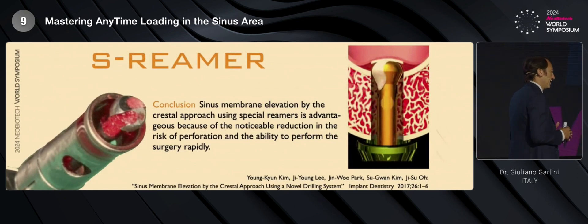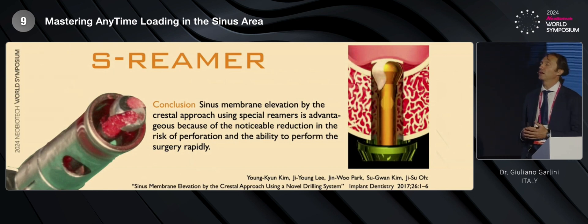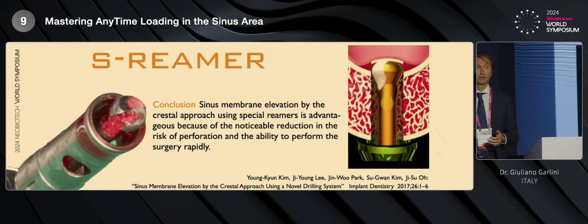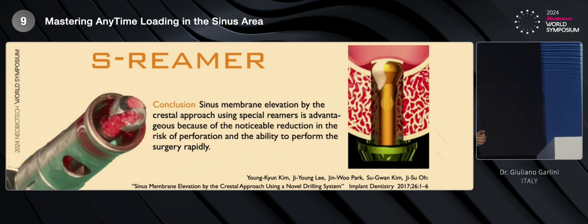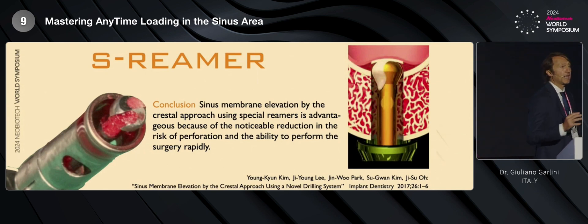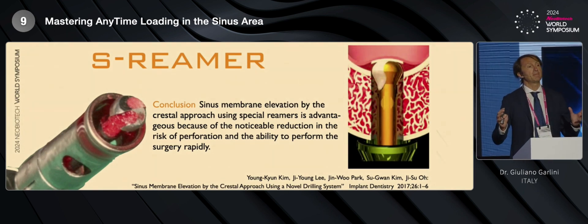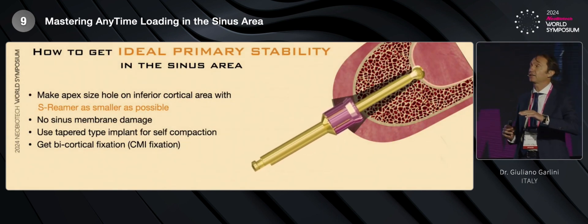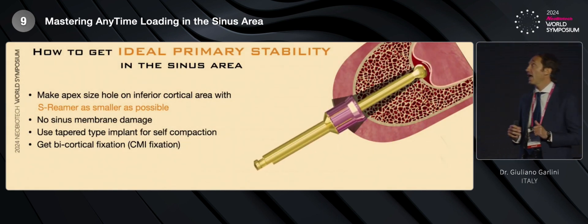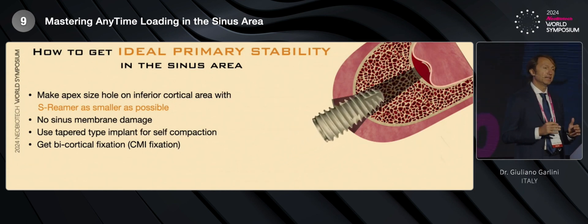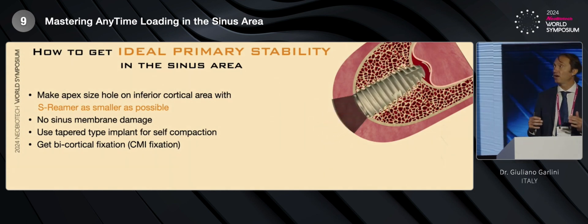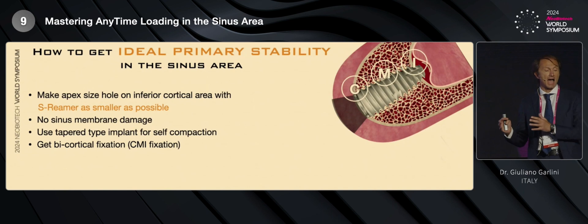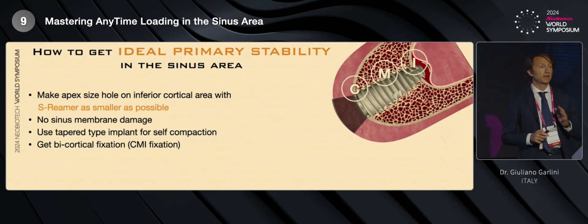Fortunately, more than 10 years ago, Dr. Rowe introduced the S-Rimmer, which is the most important actor of this surgery. This kind of burr is not able to damage the sinus membrane, but is able to create a controlled fracture in the inferior part of the sinus. And by doing this, you can insert the implant in a very gentle way and you can obtain a real CMI fixation. So, this is very, very important.